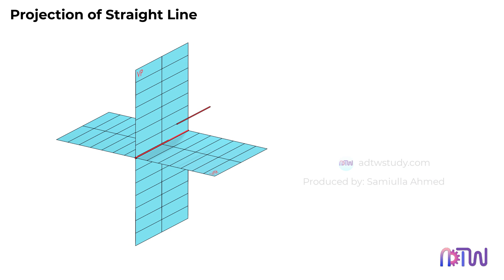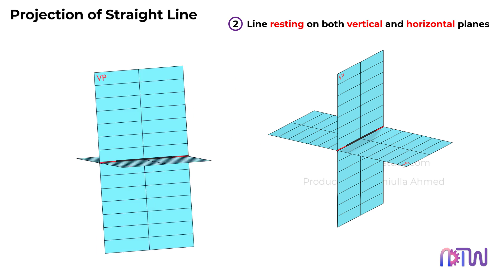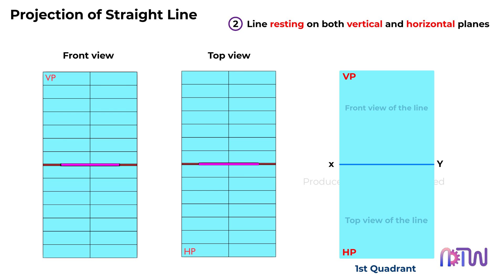Now let's explore Position 2: the line rests on both the vertical and horizontal planes. In the 3D view, it lies precisely at the intersection point of both axes. When we examine the front and top views, it appears similar to Position 1, except both views overlap at the same point. Consequently, in the 2D view, we draw both the front and top views on the reference line.